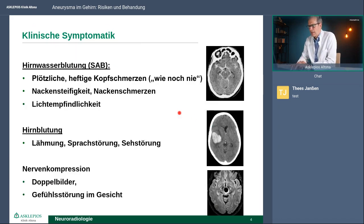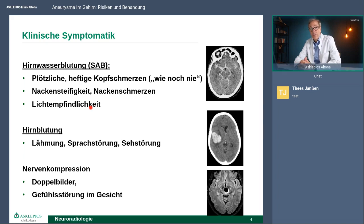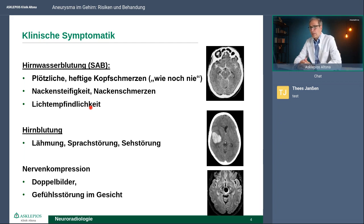Am häufigsten ist die SAB. Wie äußert die sich klinisch? Das ist ein ganz heftiger und sehr plötzlicher Kopfschmerz, wie der Patient ihn noch nie zuvor in seinem Leben erlebt hat. Dieser Kopfschmerz ist so heftig wie keiner ihn je zuvor erlebt hat – das ist außergewöhnlich. Klassischerweise hat man dann Schmerzen, die vom Kopf in den Nacken gehen, einen ganz steifen Nacken – Nackensteifigkeit oder Meningismus – und man ist sehr empfindlich auf helles Licht. Wenn Sie irgendwann eine solche Situation mitkriegen, dass ein Angehöriger solche Symptome hat: ganz heftige plötzliche Kopfschmerzen mit steifem Nacken und Lichtempfindlichkeit, dann denken Sie daran, dass das vielleicht eine Aneurysma-Blutung sein könnte.